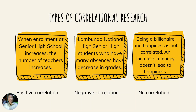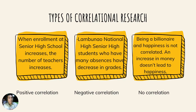Negative correlation is quite literally the opposite of a positive relationship. If there is an increase in one variable, the second variable will show a decrease and vice versa. For example, students at Lumbuno National High School who have many absences have decreased grades. As for no correlation, there is no relationship between two variables — a change in one variable may not necessarily produce a difference in the other. For example, being a billionaire and happiness are not correlated. An increase in money doesn't lead to happiness, so there is no correlation between the variables.